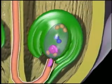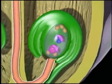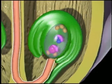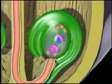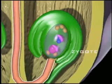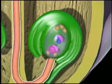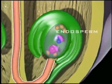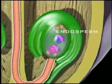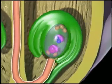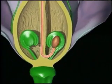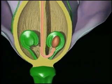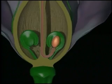When the pollen tube reaches an ovule, it breaks into the embryo sac and releases two sperm. One fertilizes the egg cell to form a zygote. The second sperm becomes part of the endosperm, food storage for the embryo. The zygote becomes enclosed in a thin, tough, waterproof outer covering, the seed coat, to form a drought-resistant seed.